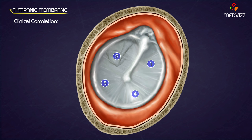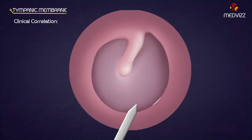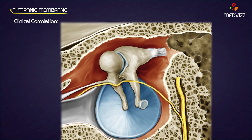Clinically, the tympanic membrane is divided into four quadrants by means of two imaginary lines passing through the umbo: one drawn along the handle of the malleus and the other at a right angle to it through the umbo. Perforation of the tympanic membrane may occur due to external injury or infection of the middle ear, known as otitis media. Sometimes an incision is given in the tympanic membrane, known as myringotomy, to drain pus from the middle ear. The incision is usually given in the posterior inferior quadrant to avoid injury to the chorda tympani nerve, which crosses the inner aspect of the membrane in its upper part.